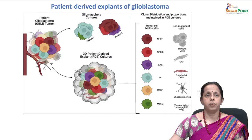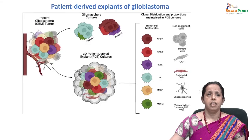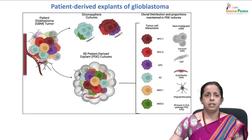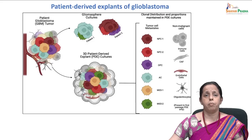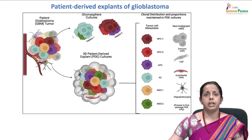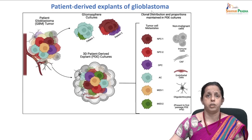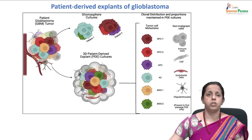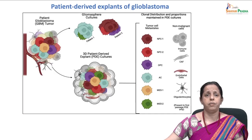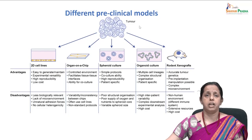This slide shows patient-derived explants of glioblastoma, where we can clearly see the patient-derived tumor which has different cells. The same number of cells have been replicated in the explant culture. For patient one and patient two, we can clearly see the difference in the types of cells, where the heterogeneity — as glioblastoma is a very heterogeneous tumor — the different clonal distributions of cells is maintained in PDE cultures and proportions can be clearly estimated.